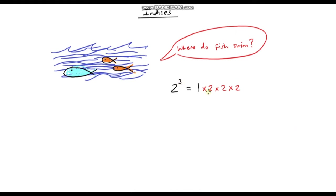So what is 1 times 2 times 2 times 2? Well, 2 times 2 times 2 is 8 — our answer is 8. So it's just a shorter way of writing all of this. 2 to the power of 3 is 1 times 2 times 2 times 2.